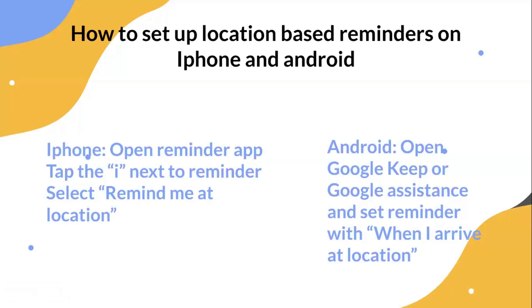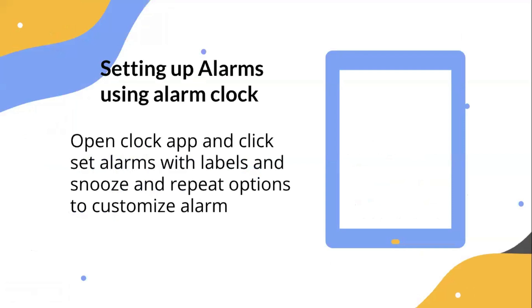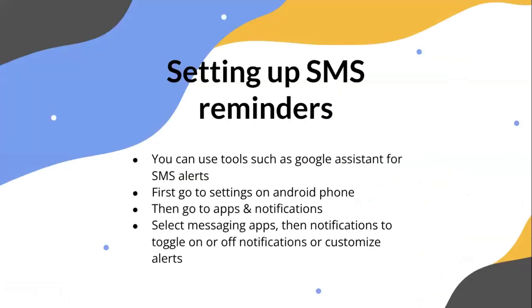On Android, you can open Google Keep or Google Assistant and set a reminder with the 'when I arrive at this location' setting. To set up alarms, open the Clock app and set alarms with labels, snooze, and repeat options. For SMS reminders, you can use Google Assistant: go to Settings, then Apps and Notifications, select messaging apps, then Notifications to toggle on or off or customize alerts.